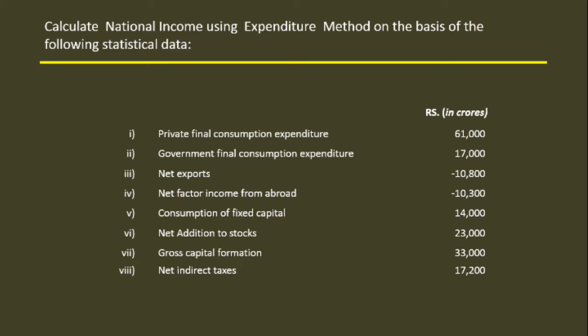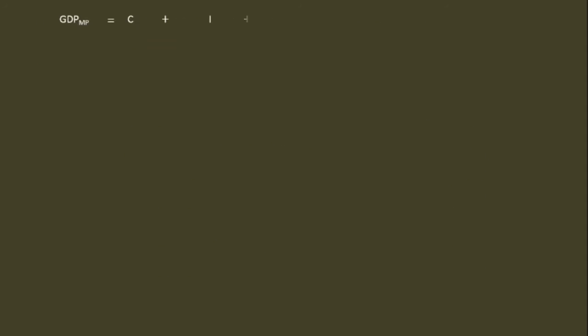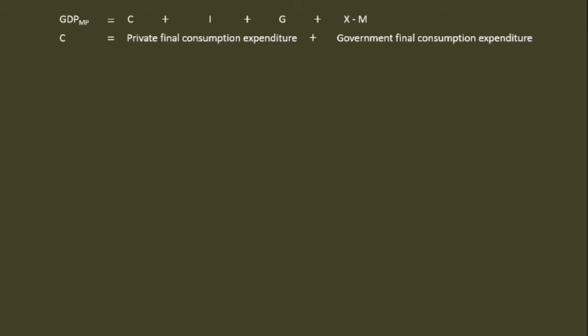The problem involves calculating Gross Domestic Product at Market Price. Gross Domestic Product at Market Price is equal to C plus I plus G plus X minus M — that is, Consumption Expenditure plus Investment Expenditure plus Government Expenditure plus Net Exports. All Consumption Expenditure must be bunched under the head C, which equals Private Final Consumption Expenditure.